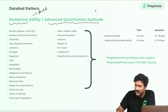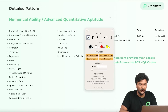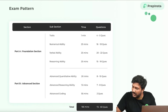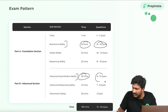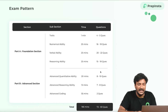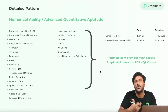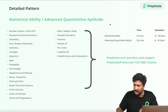The syllabus for Numerical Ability and Advanced Quantitative Aptitude is exactly the same — both are aptitude or quants. As you can see on the slide, even though the time and number of questions differ between the two, the syllabus for both is identical because both test quantitative ability.